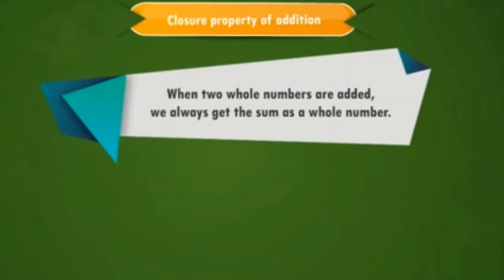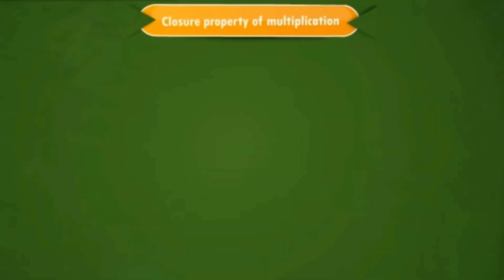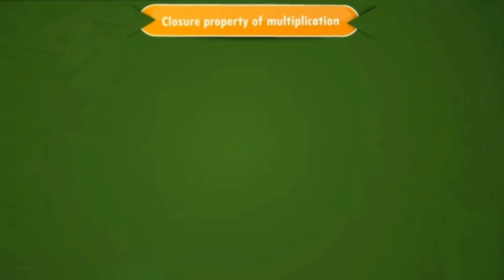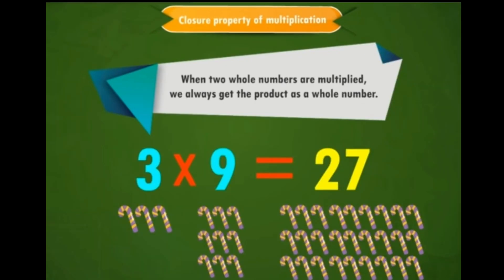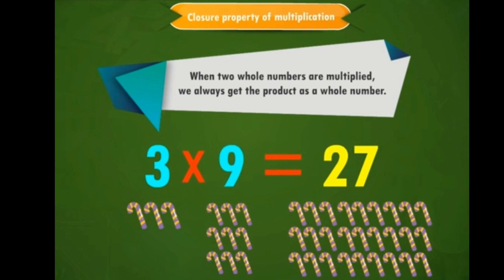Closure property of addition: when two whole numbers are added, we always get the sum as a whole number. For example, 5 + 6 = 11. Closure property of multiplication: when two whole numbers are multiplied, we always get the product as a whole number. For example, 3 × 9 = 27. Whenever we add or multiply two whole numbers, we always get a whole number. This closure property holds under addition and multiplication only.